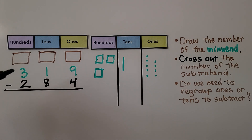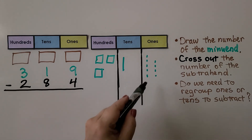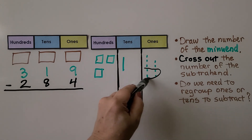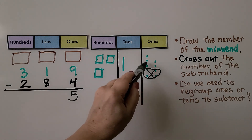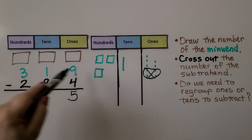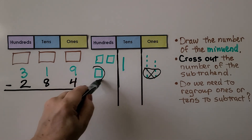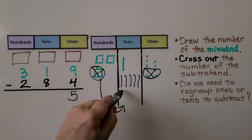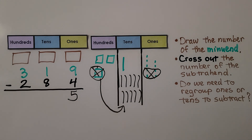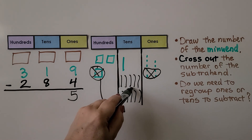Let's try another example: 319 minus 284. We start with the ones place — we have nine ones and need to take away four ones; we can do that. Nine minus four equals five. Now we have one ten and need to take eight tens away. So we take this hundred and move it to the tens place as ten tens. So instead of one ten we now have eleven tens. We take eight away, leaving three tens.